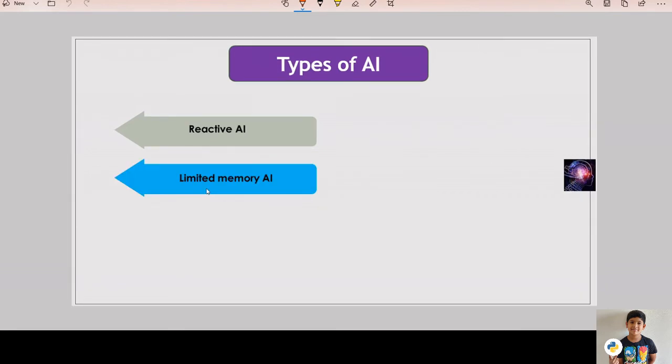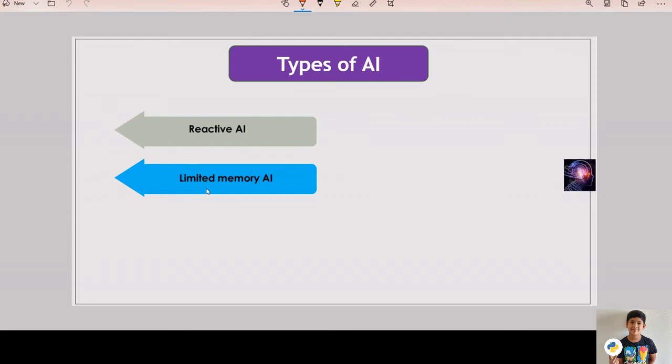Next type is limited memory AI. Limited memory AI utilizes multiple classification and detection algorithms which has memory capabilities. Limited memory machines are machines that in addition to having the capabilities of purely reactive machines are also capable of learning from historical data to make decisions. Self-driving cars are one of the best examples of limited memory systems.